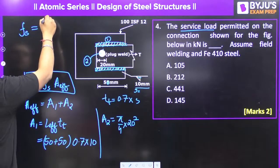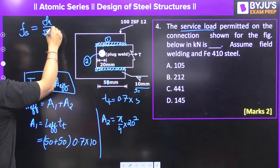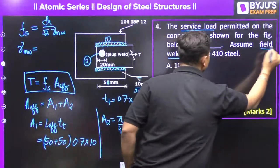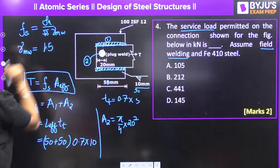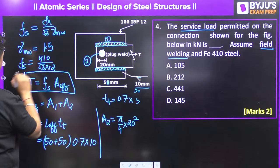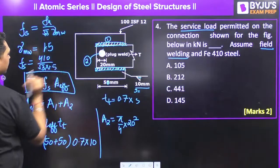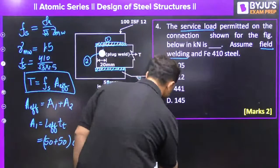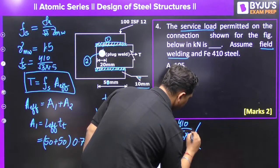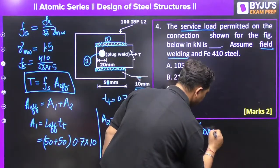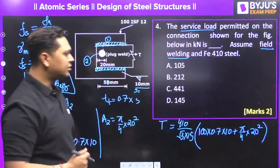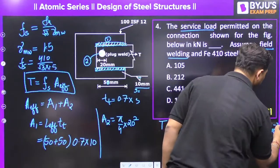For field welding, the partial safety factor is 1.5. So shear strength equals 410 divided by (root 3 into 1.5). Substituting all values: T equals [410 / (root 3 × 1.5)] into [100 × 0.7 × 10 + (pi/4 × 20²)], converted to kilo-newtons by multiplying by 10 to the power of minus 3.